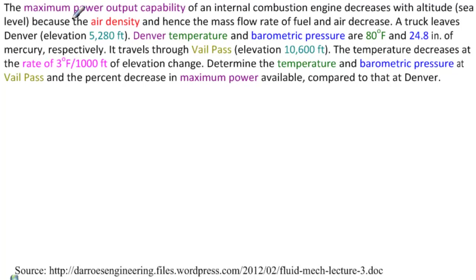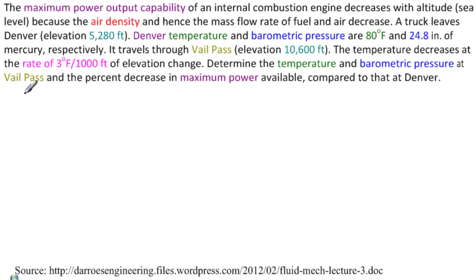The problem reads: the maximum power output capability of an internal combustion engine decreases with altitude because the air density, and hence the mass flow rate of fuel and air, decrease. A truck leaves Denver, elevation 5,280 feet. Denver temperature and barometric pressure are 80 degrees Fahrenheit and 24.8 inches of mercury, respectively. It travels through Vail Pass, which is at an elevation of 10,600 feet. The temperature decreases at the rate of 3 degrees Fahrenheit per 1,000 feet of elevation change. Determine the temperature and barometric pressure at Vail Pass and the percent decrease in maximum power available compared to that at Denver.